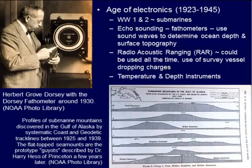Around 1923 to 1945, this was the age of electronics. During World War I and World War II, there were a lot of submarines. To maneuver in the ocean without a visual of the ocean floor, they used sound waves — echo sounding and bathometers — to bounce sound waves off different objects to determine depth and the surface topography of the ocean floor. Later they used Radio Acoustic Ranging, or RAR, which could be used any time, even in big stormy seas. A survey vessel would drop charges in different areas, the charges would go off, and a ship would record the sound waves bouncing off the ocean floor. Temperature and depth instruments were also starting to be used during this time.